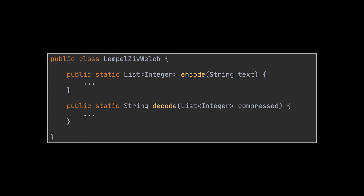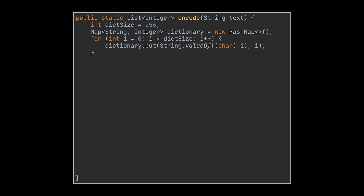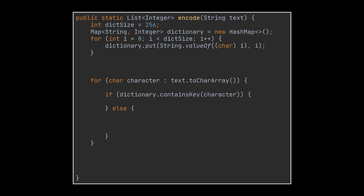Now that we know how to encode and decode a given text using the LZW algorithm, let's implement it, starting with the encode method. The first thing we need to do is create the starting dictionary of size 256. This dictionary will be a map, and to create it we loop over integers 0 through 256 and for each integer insert its corresponding string value along with its code value. While encoding, we know the characters and want to retrieve the number representations, so we set the character as the key and the code as the value in the map.